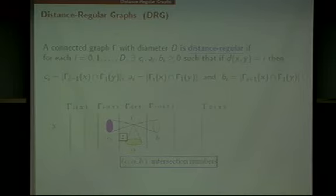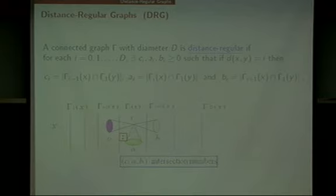The most trivial examples of DRGs are, as you know, the five Platonic solids, the Hamming graphs, and so on. These parameters are called the intersection numbers. In this talk, we are focused on the parameter C_2. Note that these parameters depend on the distance from the base vertex x — that is, on i — not on the choice of vertex y or z.